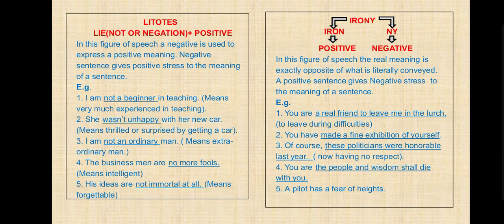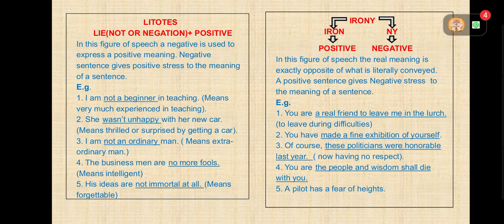Now litotes — negation plus positive. In this figure of speech a negative is used to express a positive meaning. A negative sentence gives positive stress to the meaning. If a negative word is used in any sentence or poem line, that line is called litotes. Examples: 'I am not a beginner in teaching' — meaning very experienced. 'She was not unhappy with her new car' — meaning thrilled. 'I am not an ordinary man' — meaning extraordinary. 'The businessmen are no more fools' — meaning intelligent. 'His ideas are not immortal at all' — meaning forgettable.